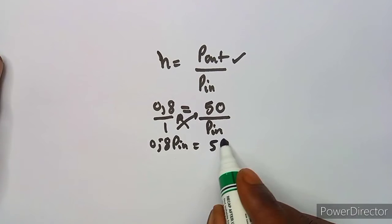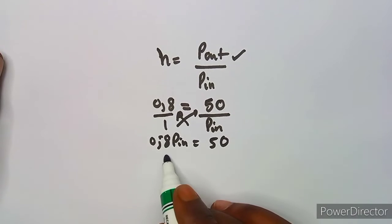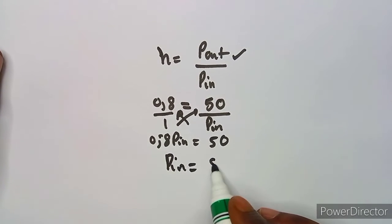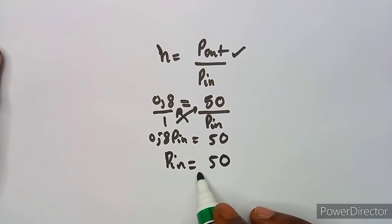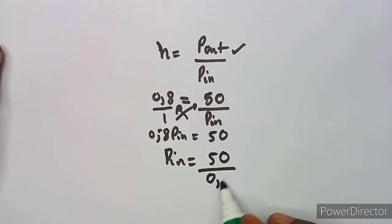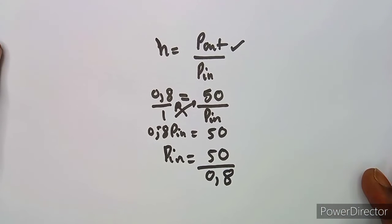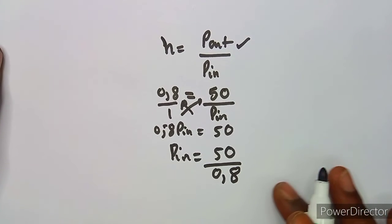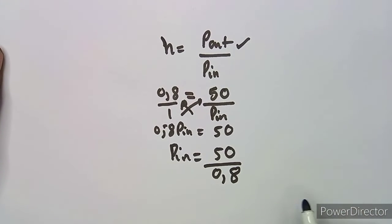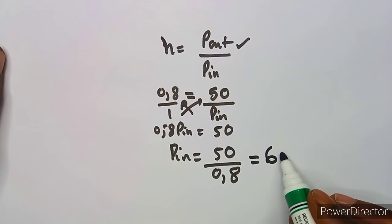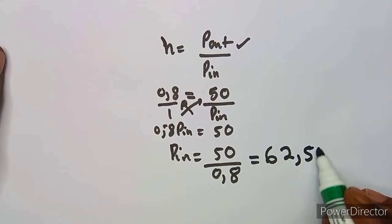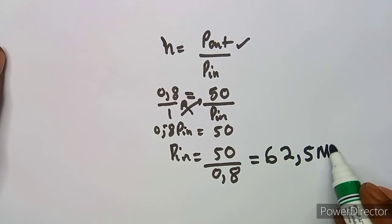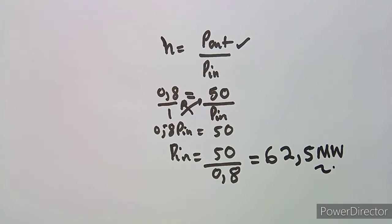So P_in equals 50 divided by 0.8, which gives you 62.5 megawatts. That's your input power.